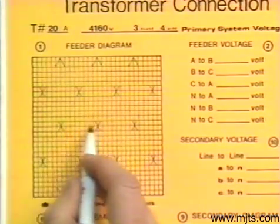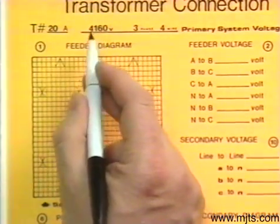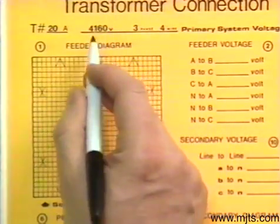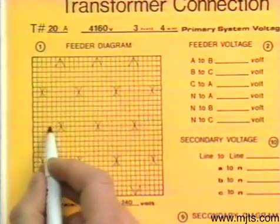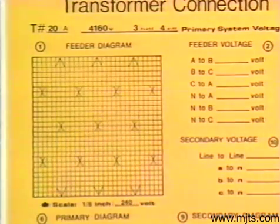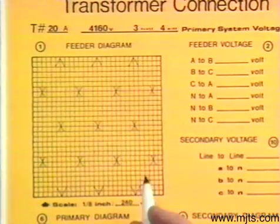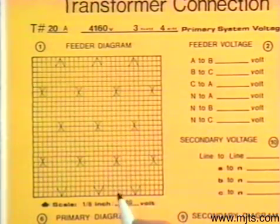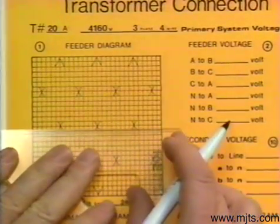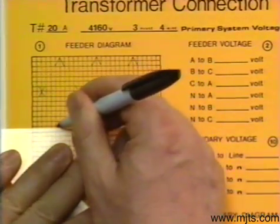The phase-to-neutral value on a 4160 system is found by dividing 4160 by 1.73, which gives us 2400 volts per vector to neutral. If I divide 240 into 2400 volts, it goes in 10 times — that's 10 eighths, or one and a quarter inches. So I'll have an inch-and-a-quarter vector for each of my phases.